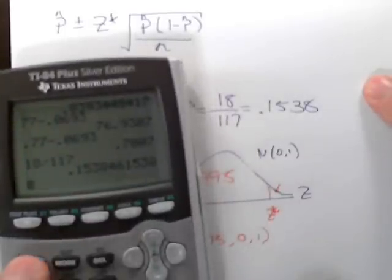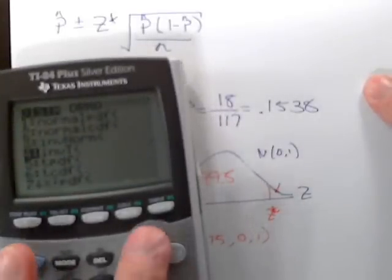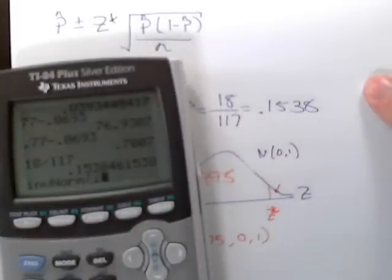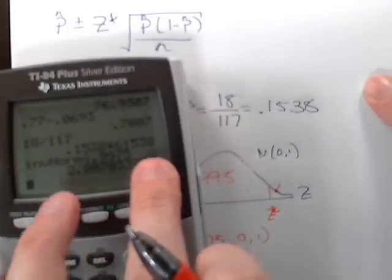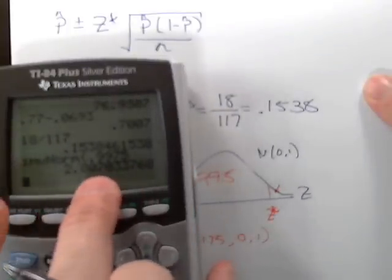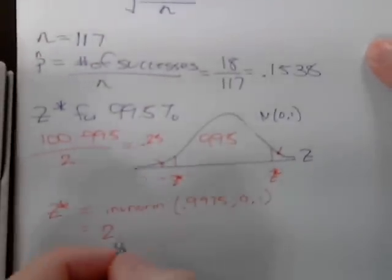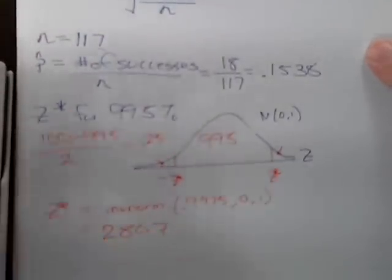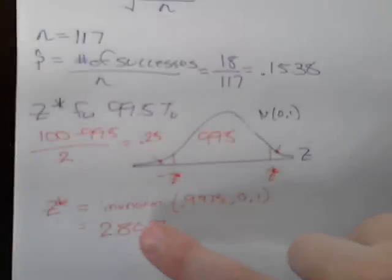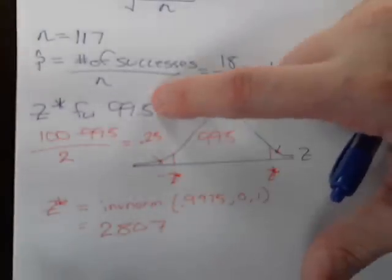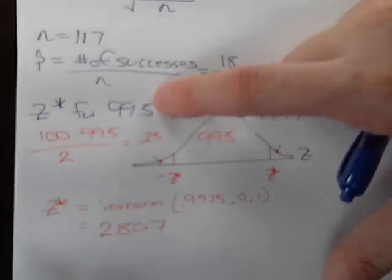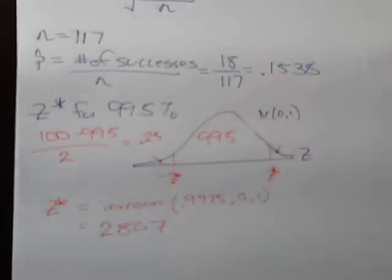Typing that in the calculator, second distribution inverse norm, it's going to be 0.9975, and we don't need to enter the 0.1. We get 2.807, so z-star is 2.807, which seems about right because we have memorized that 99% is 2.576, so this is a little bit more.